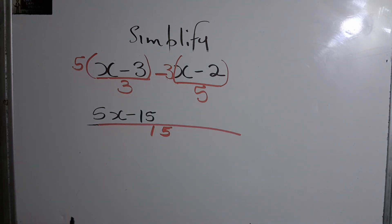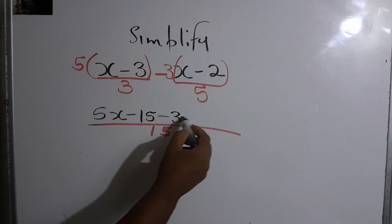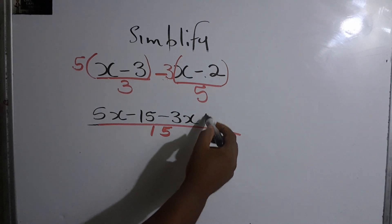This is a very common error that students make. So negative times that will give us minus 3x. Minus 3 times minus 2 will give us positive 6.